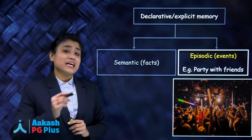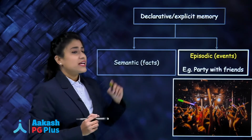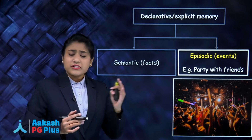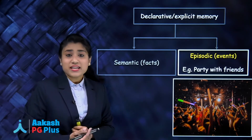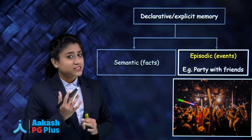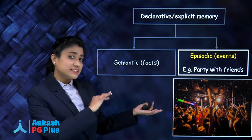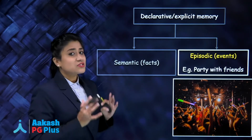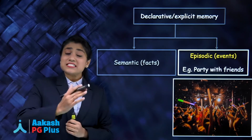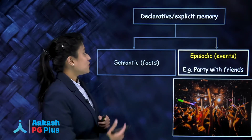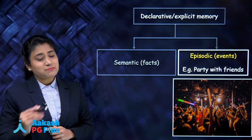Episodic memory tells about events. For example, if I ask you where you enjoyed your last birthday with your friends, you will think and then describe what happened. That is episodic memory, which tells about events and comes under explicit memory.